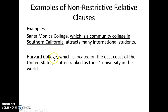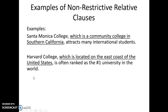'Harvard College, which is located on the east coast of the United States, is often ranked as the number one university in the world.' We have a non-restrictive relative clause — 'which is located on the east coast of the United States' — with commas around it. We can take out the relative clause and we have a sentence that still makes sense: 'Harvard College is often ranked as the number one university in the world.' We don't need this extra information to identify which Harvard College; there's only one Harvard College in the world.